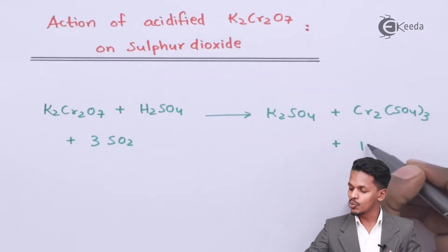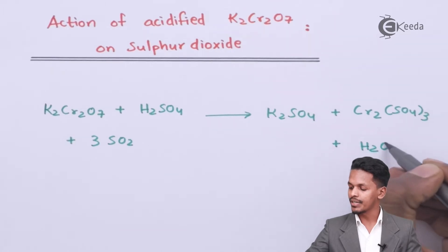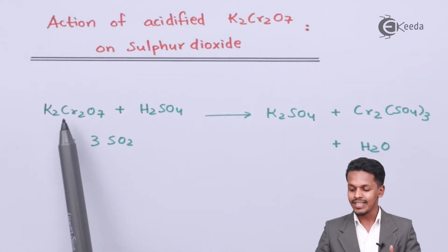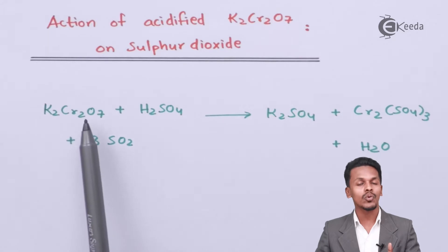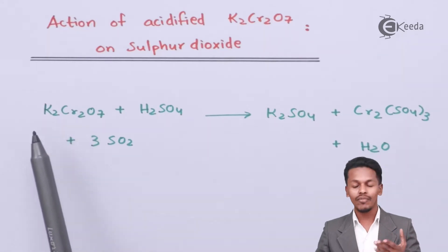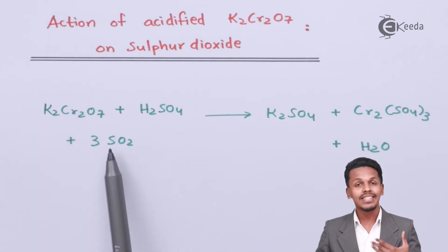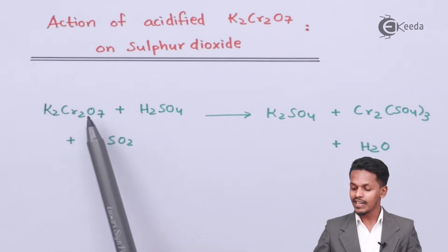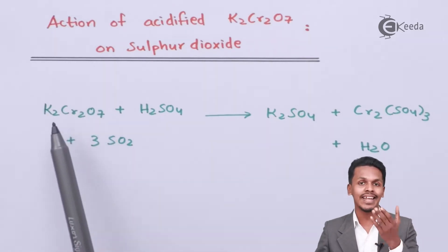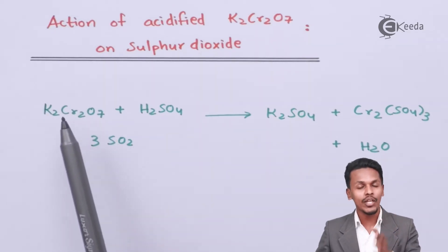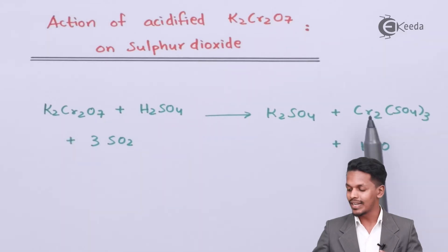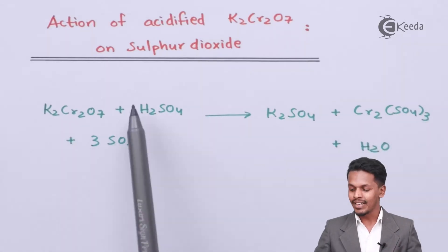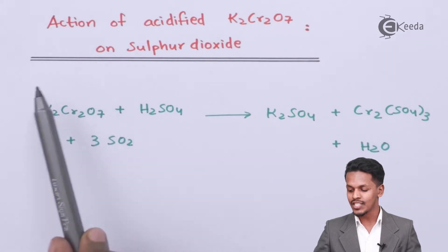We have potassium sulfate as one product. In this reaction, K2Cr2O7 acts as a good oxidizing agent — it oxidizes the sulfur dioxide to form H2SO4. The Cr2O7²⁻ ion, acting as an oxidizing agent, gets reduced to Cr2(SO4)3.